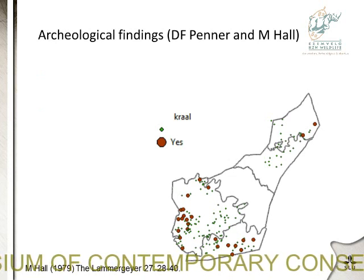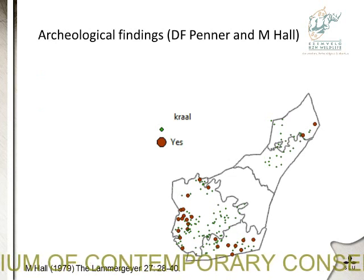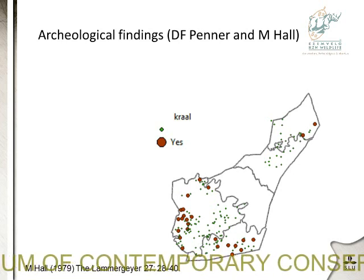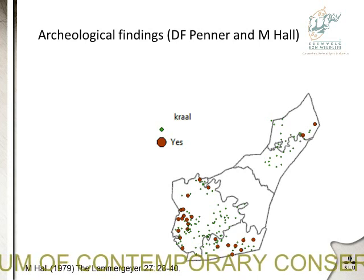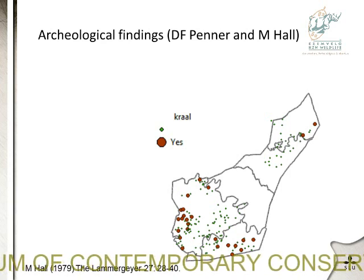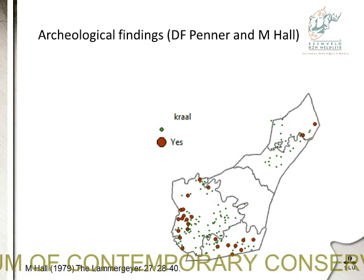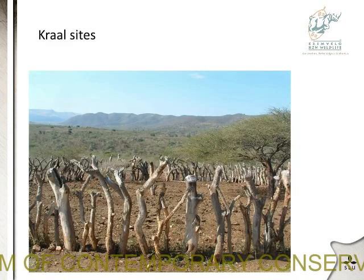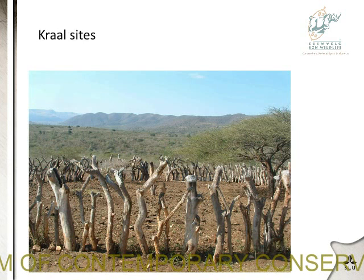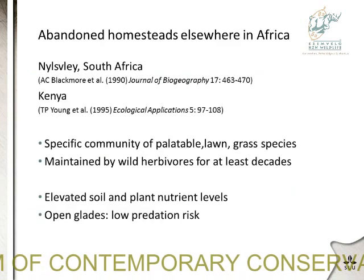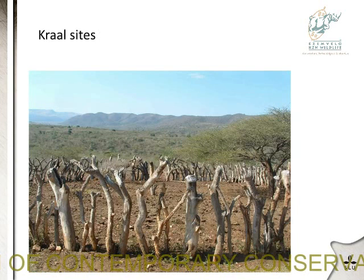This overview shows some of the data available on archaeological findings in HiP. All the dots represent some kind of archaeological finding. The big red dots are clear signs of kraal sites — so there used to be a kraal on those locations. This is actually just a minimum count because the whole park has not been covered equally intensively. A kraal is basically an area where livestock is kept overnight, so you get these circles of bare ground with lots of input of dung and urine.